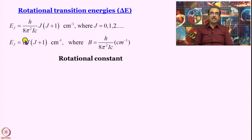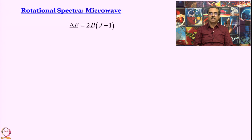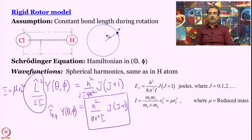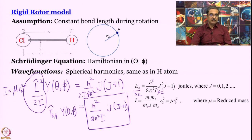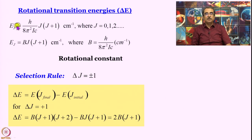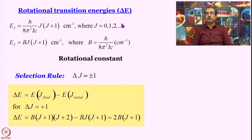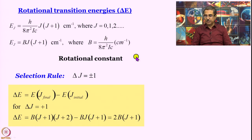Generally, it is conventional to not work in joules when we talk about microwave spectroscopy — we like to work in wavenumbers. To write the energy in wavenumbers, we divide by hc. So h cancels and we are left with a c in the denominator, giving: ε_J = h/(8π²Ic) × J(J+1) cm⁻¹, where J = 0, 1, 2, exactly like the subsidiary quantum number of the hydrogen atom. In short, this is written as E_J = B·J(J+1) cm⁻¹, where B = h/(8π²Ic) is the rotational constant in cm⁻¹.